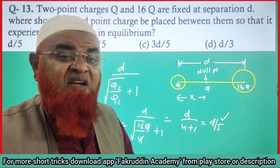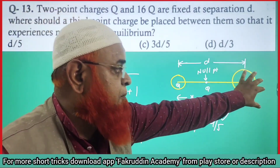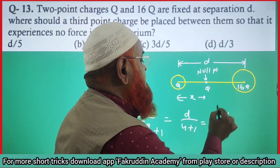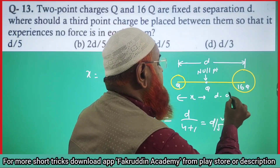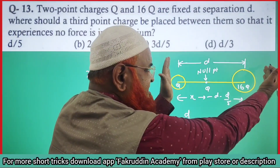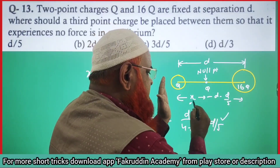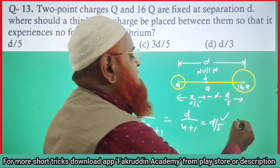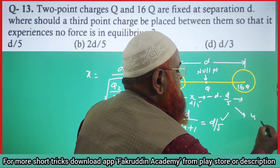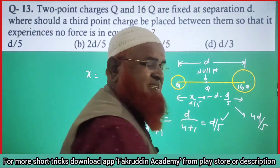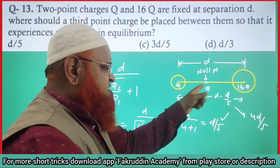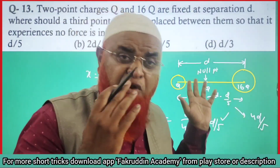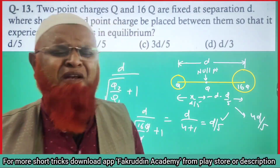If the question asks for the distance of the neutral point from the larger charge, it is very easy — you have to find D minus D by 5. Because the total distance is D and X is D by 5. If you remove D by 5 from D, you get 4D by 5. So the conclusion is: from the smaller charge the neutral point is D by 5, and from the larger charge the neutral point is 4D by 5.